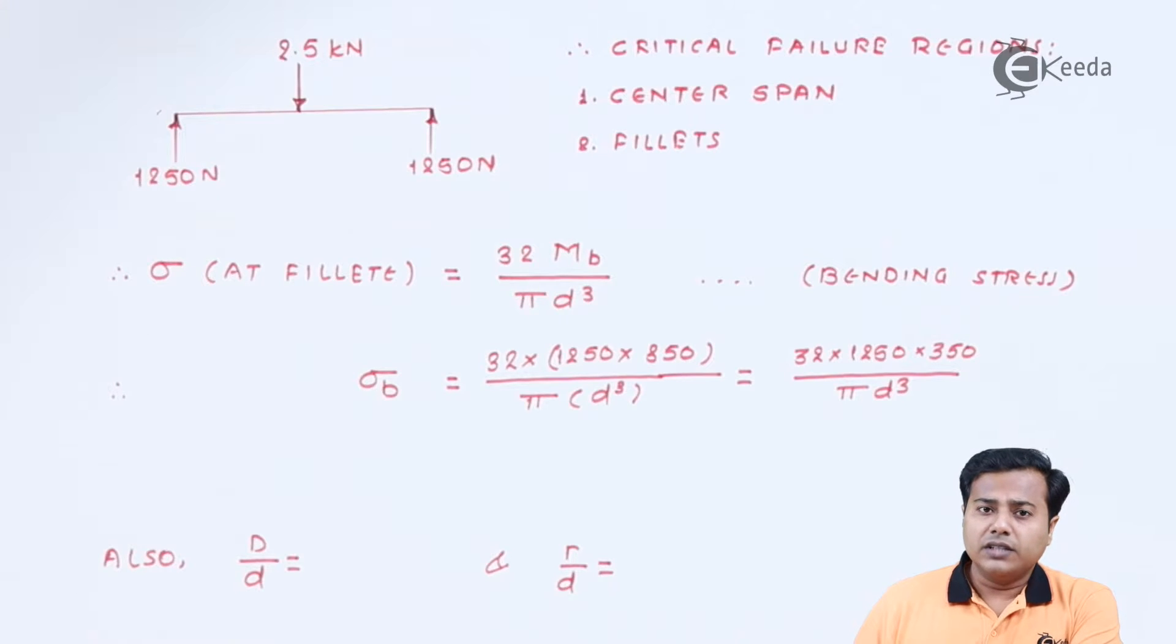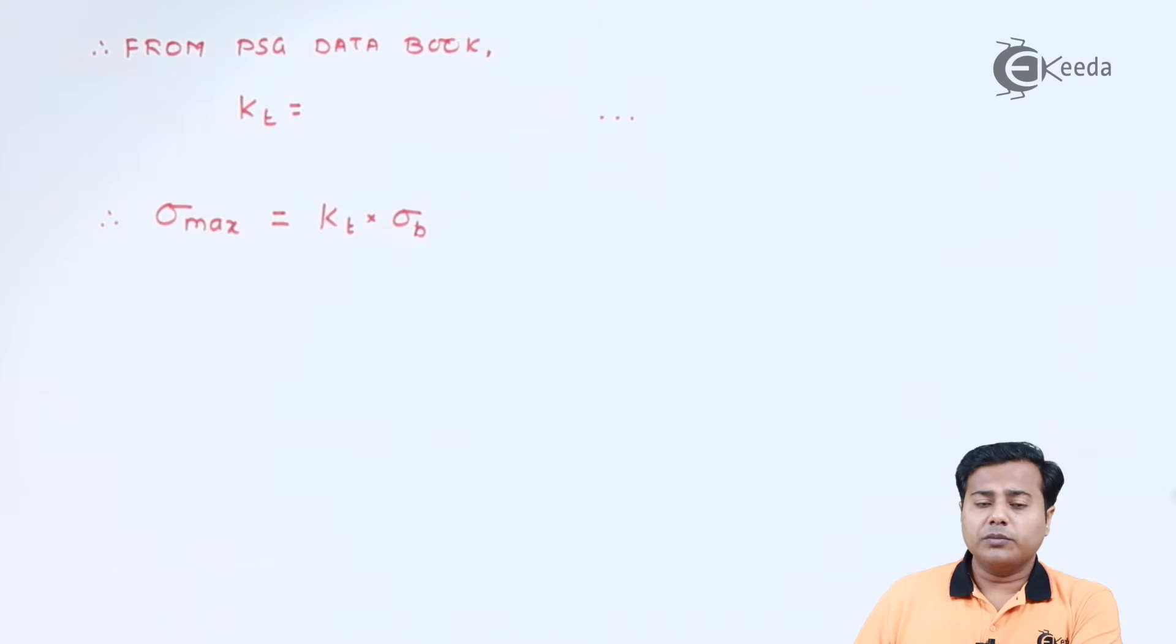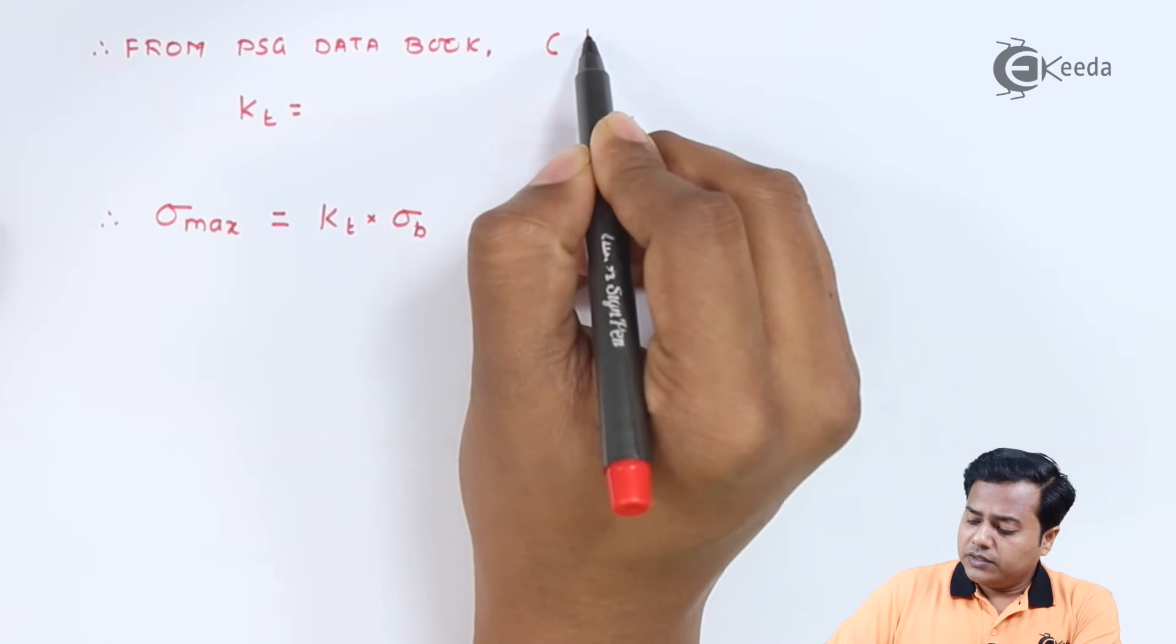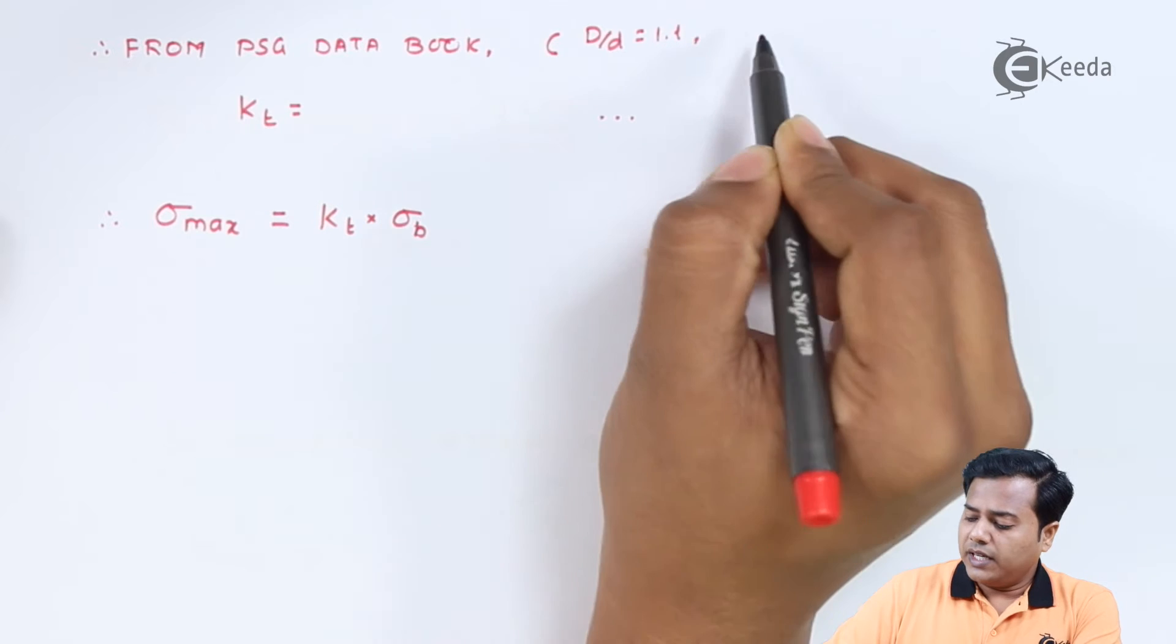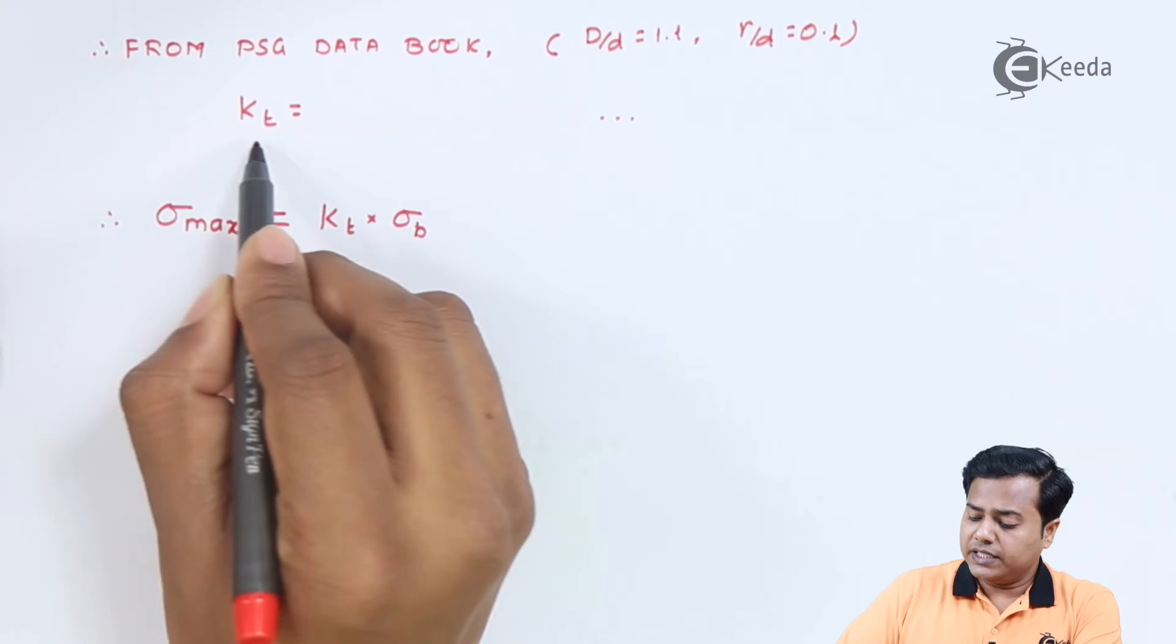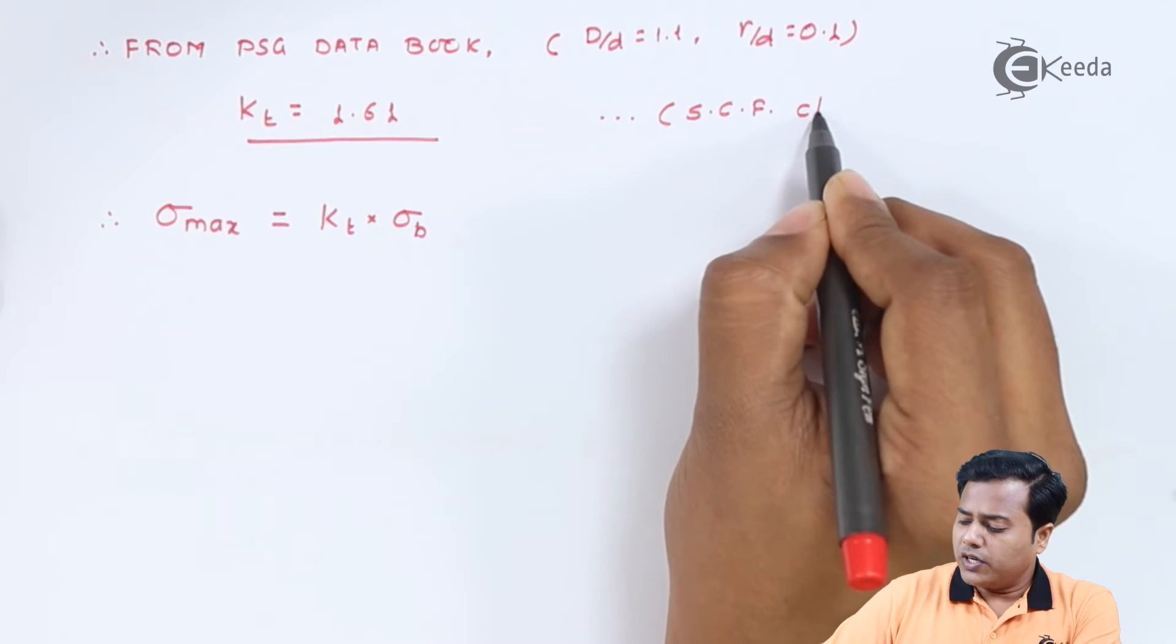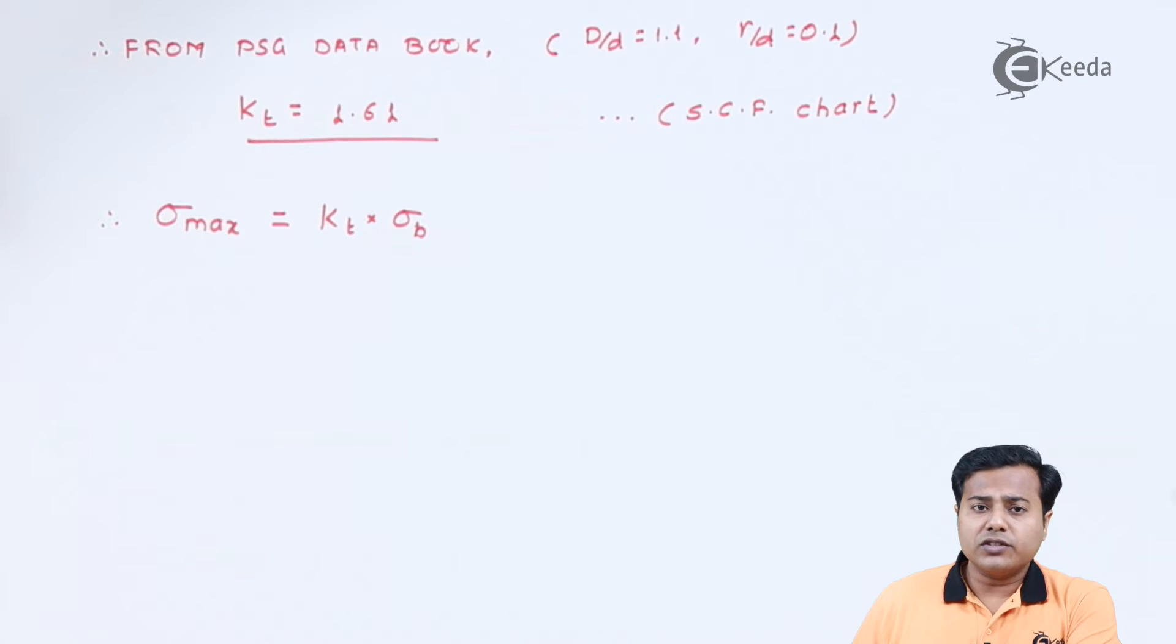Now let us talk about the stress concentration factor. We know that at this region the stress is going to be concentrated. Now let us use the relations to find out the stress concentration. Now if you look at the diameter related diameter and their ratio we will get something as 1.1 and as far as the radius of the fillet is concerned we will get 0.1 as the answer. Moving ahead with this data, using design data book from the section of stress concentration factor, it is very clear that for the D by d ratio of 1.1 and small r to d ratio 0.1, the stress concentration factor kt is equal to somewhere around 1.61.